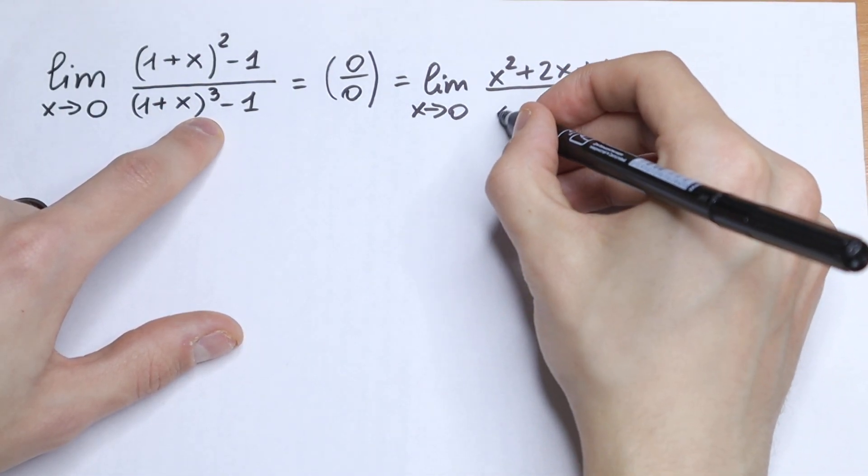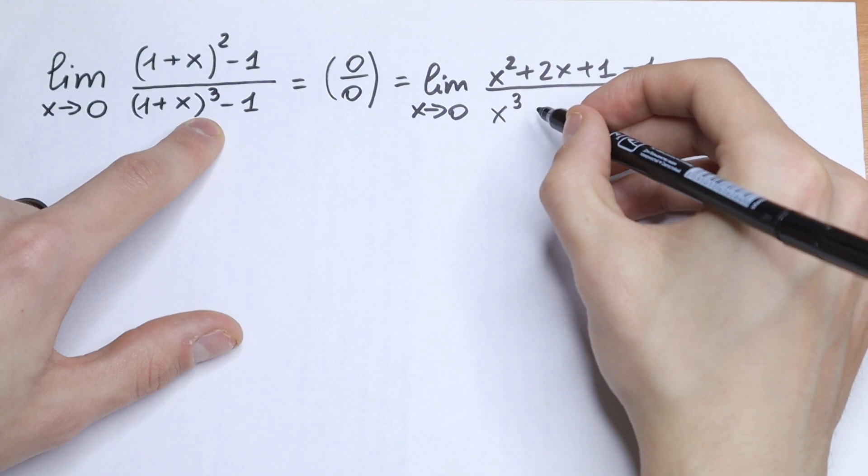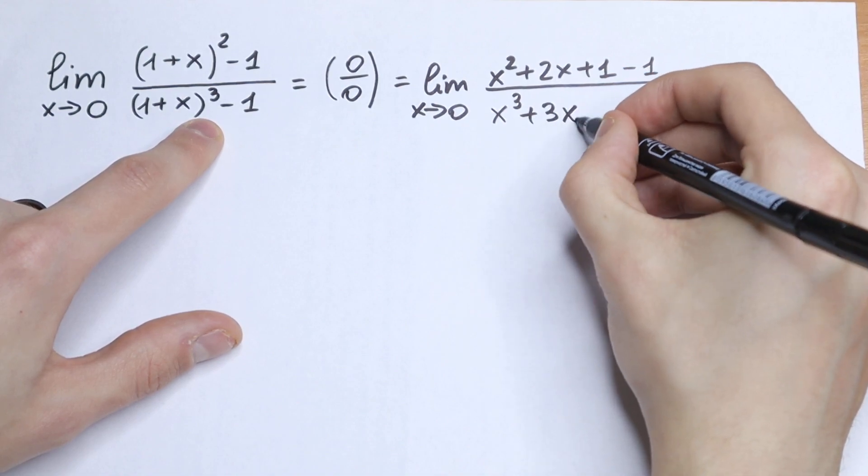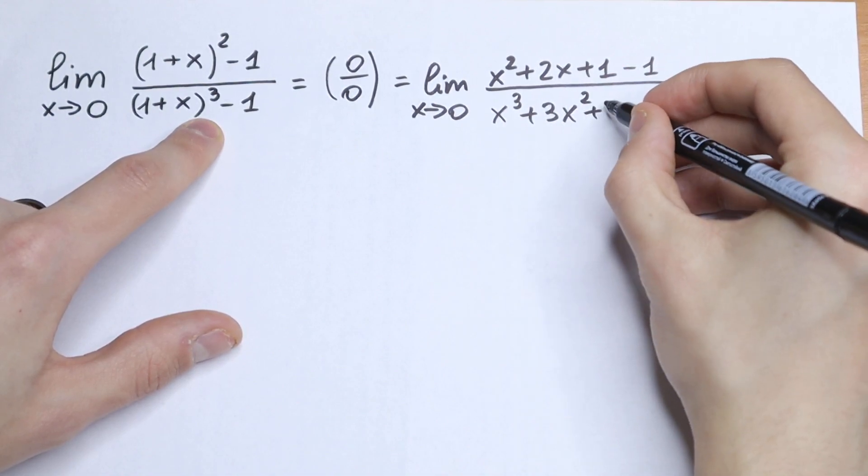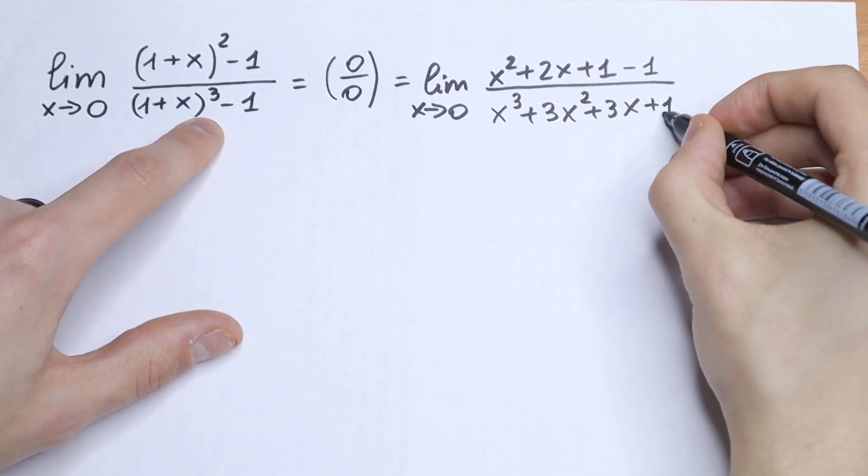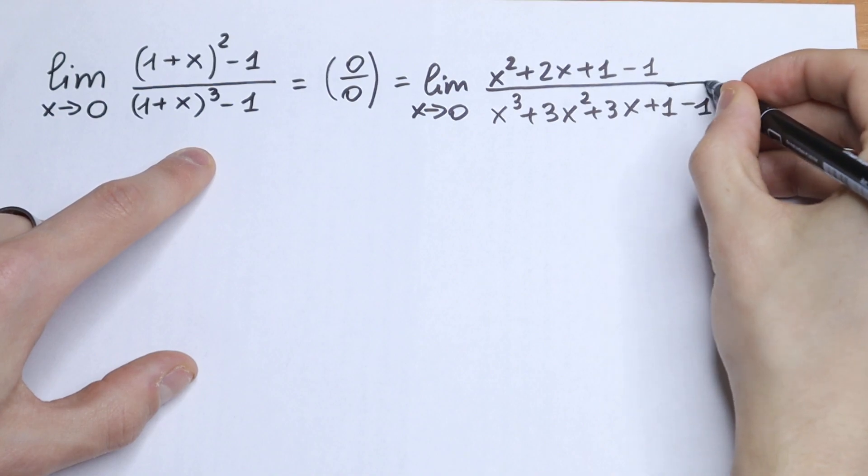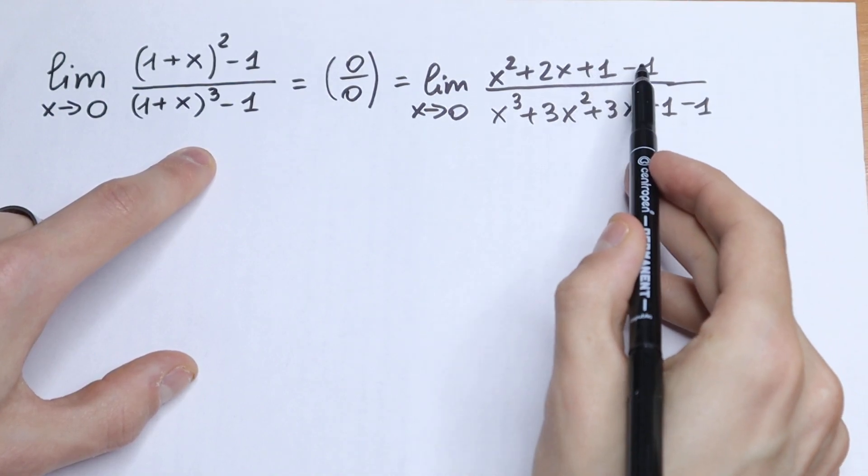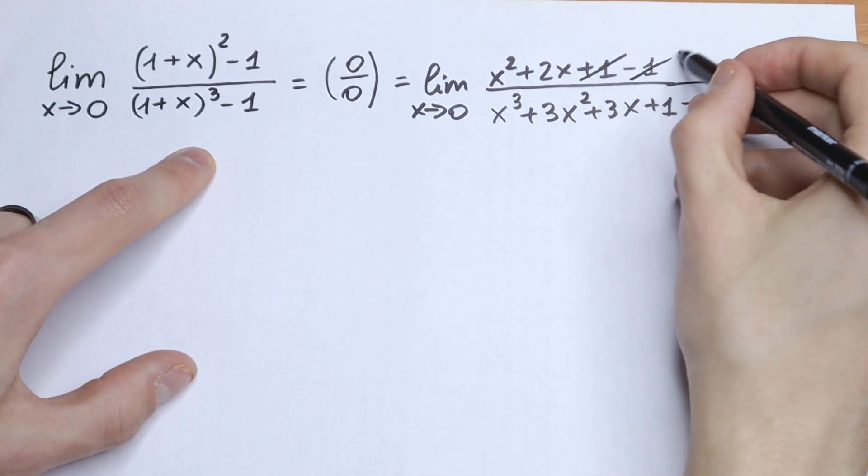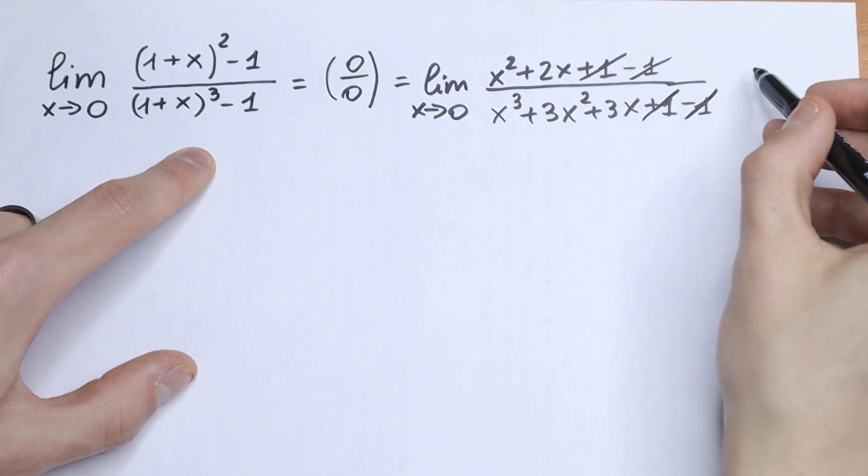And in our denominator we will have a different formula. We will have the cube formula: x³ + 3x² + 3x + 1. This is our parentheses and minus 1. This +1 minus 1 we can cancel, and this in our denominator we can cancel as well.